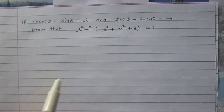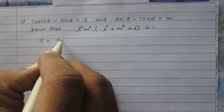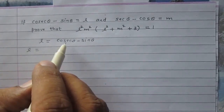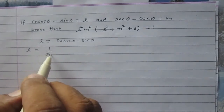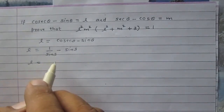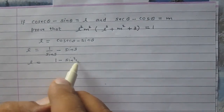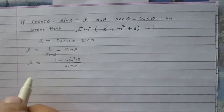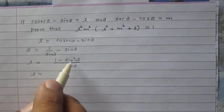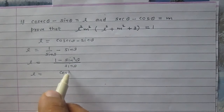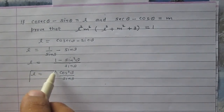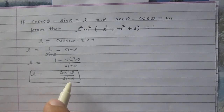We are given that l = cosec theta minus sine theta. Since cosec theta is the reciprocal of sine theta, it can be written as 1 upon sine theta minus sine theta. On simplification, l = (1 minus sine squared theta) upon sine theta, and since 1 minus sine squared theta equals cos squared theta, we get l = cos squared theta upon sine theta.